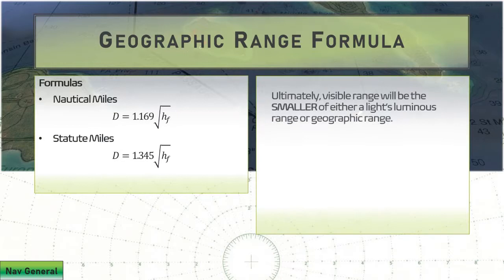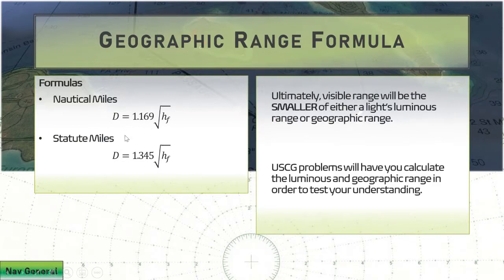The good news is if you don't like tables, you can just use the formulas directly. Here they are for nautical miles and statute miles. You take these constants, 1.169, and that'll give you the nautical miles if you multiply that by the square root of the height of the object in feet. This could be either you or the light. Remember, if you do it this way, you have to add both parts, one for the light to the horizon and one for you to the horizon. The constant is different for statute miles, 1.345. For any light, we're going to have a luminous range and a geographic range.